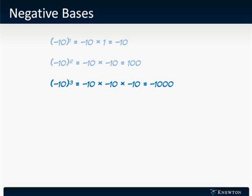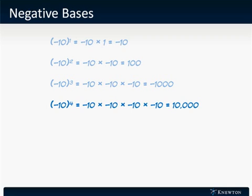10 to the fourth, if 10 is negative, is negative 10 times negative 10 times negative 10 times negative 10. That's two sets of two negative numbers which combine to make positive numbers. And so our product is, of course, positive 10,000.